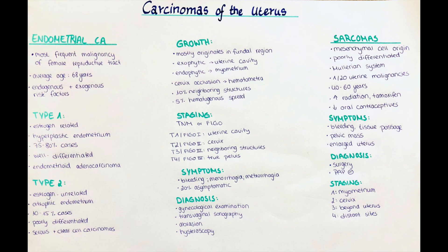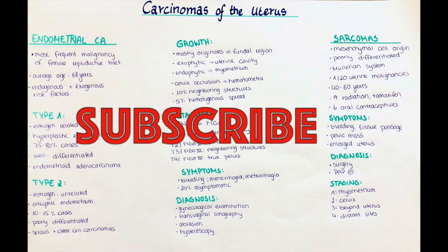In stage 1, the uterine sarcoma is limited to the myometrium. In stage 2, it has progressed to the cervix and its connective tissue. In stage 3, the tumor has spread beyond the uterus but remains limited to the pelvis. In stage 4, it spreads to neighboring and distant sites such as the bladder, intestines, and various lymph nodes. Unfortunately, the prognosis is rather poor: the average five-year survival rate for early stages is around 50%, while for advanced stages it is estimated at around 10%. That's it for this topic — I hope it was interesting, and if you like our channel, please subscribe. Thank you very much.